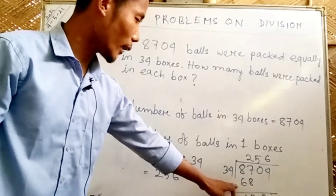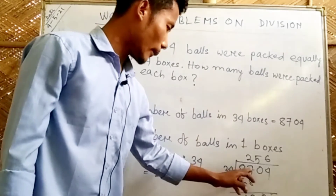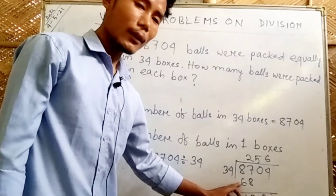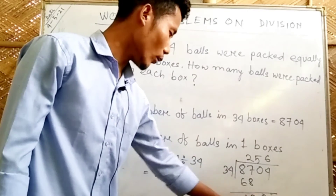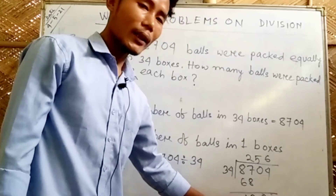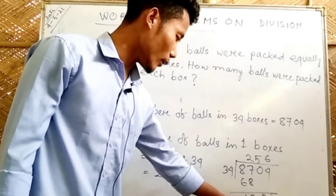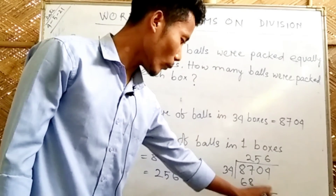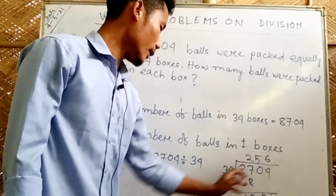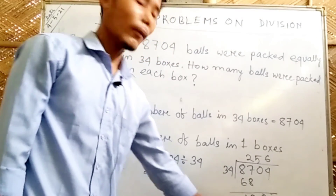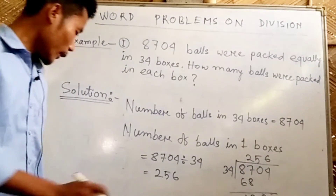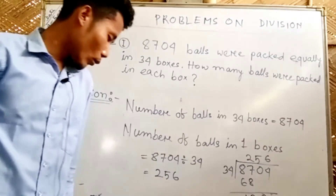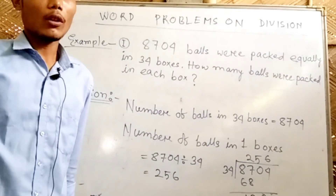Continuing the division: 34 into 170 is 5, remainder 0; 34 into 204 is 6, remainder 0. The answer is 256 balls packed in each box. The total of 8700 balls divided equally into 34 boxes gives 256 balls per box.